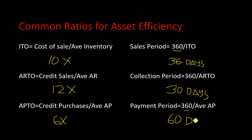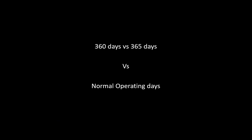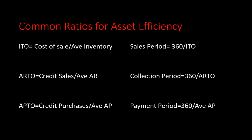A common question is whether to use 360 or 365 days — it doesn't really matter as long as you are consistent. If you started using 360, keep using 360; if you prefer 365 for accuracy, use 365. Better still, use your actual normal operating days — if you only operated 250 days in a year, use 250 days across all your ratios.